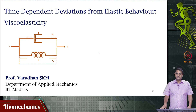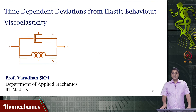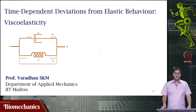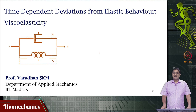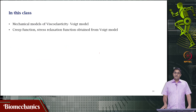Welcome to this video on biomechanics. We have been looking at viscoelasticity — biological materials exhibiting both viscous and elastic properties. In the last video, we looked at one model of viscoelasticity, the Maxwell model. In this video, we will continue our discussion on viscoelasticity, which is the time-dependent or strain-rate-dependent deviation in elastic behavior. We will be looking at another model called the Voight model.